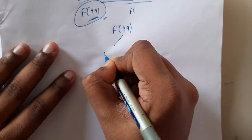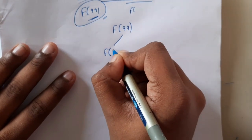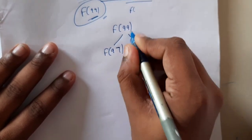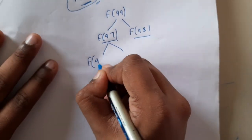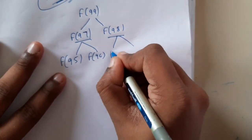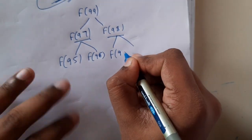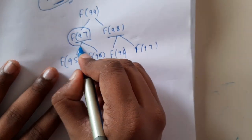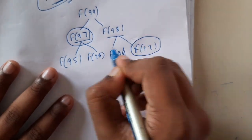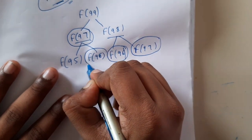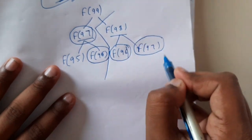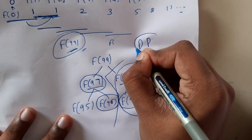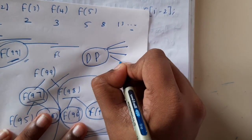For example, Fibonacci(99) = Fibonacci(97) + Fibonacci(98). Fibonacci(98) = Fibonacci(96) + Fibonacci(97). If you notice, Fibonacci(96) appears in the calculation of both Fibonacci(97) and Fibonacci(98) — it is repeated. So if you store that value somewhere, you can directly substitute it instead of recomputing.